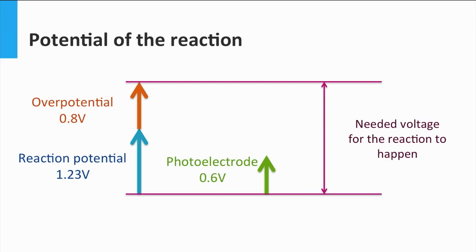This voltage will be partly covered by the potential difference created within the photoelectrode when light shines on it. But that only compensates for around 0.6 V of the needed voltage, depending on the material used, which is not enough. That is why these photoelectrodes are often combined with solar cells that give the extra potential needed for the reaction to happen. The combination of a photoelectrode and a solar cell forms a photoelectrochemical device.